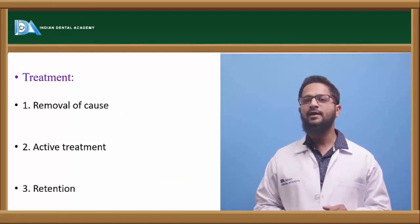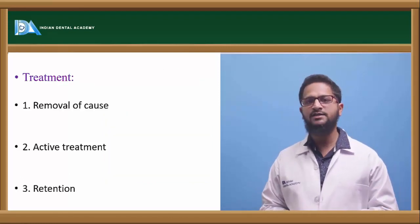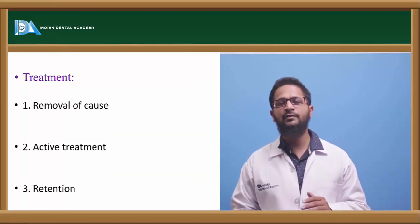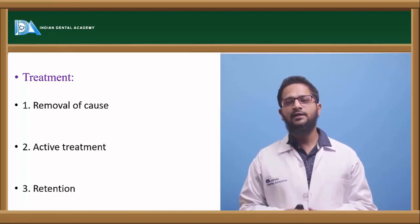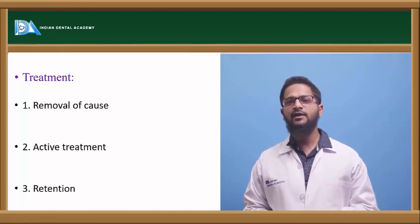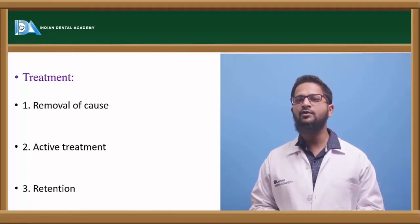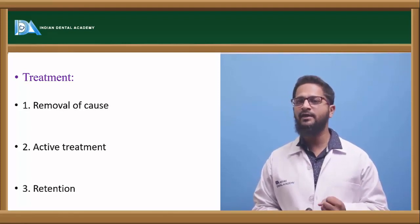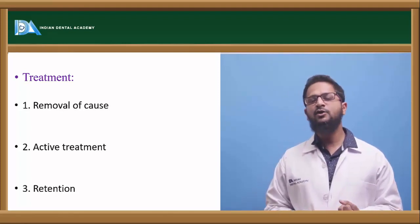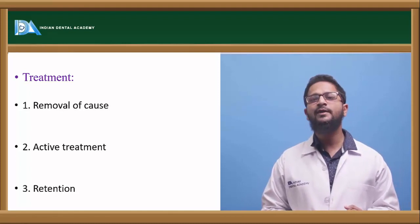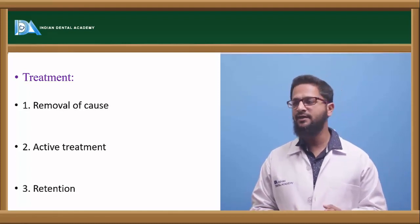What is the treatment? First is removal of the cause. If midline diastema is occurring because of thick labial frenum, then this thick labial frenum has to be incised — frenectomy or frenotomy, based upon the requirement, has to be done. If it is occurring because of some abnormal habit like thumb sucking or tongue thrusting, that habit has to be intercepted.